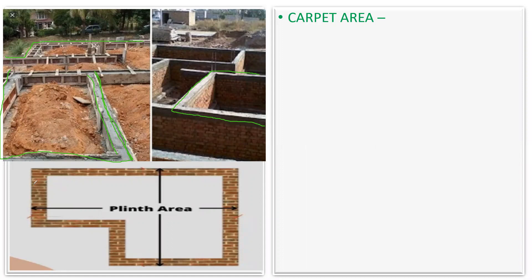This is the wall they have constructed — outer to outer. From this outer-to-outer measurement, let's say I am getting 200 square feet. This 200 square feet area is called my plinth area.